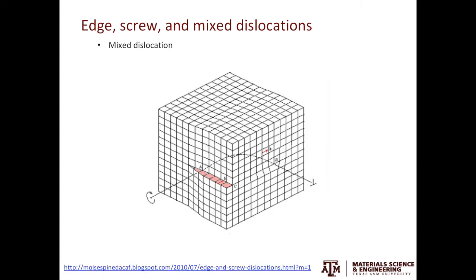Combining both the screw and edge characters in a dislocation gives you a mixed dislocation. In this example, one part has the edge component and another part has the screw component, making it a mixed dislocation. If you see a dislocation that is curved, then you can be 100% sure it is a mixed dislocation.